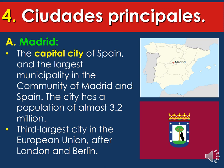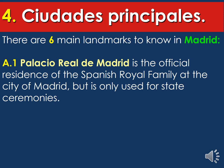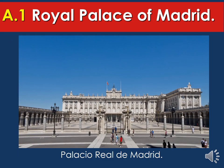There are six main landmarks to know in Madrid. The first is Palacio Real de Madrid — the Royal Palace of Madrid. It is the official residence of the Spanish royal family at the city of Madrid, but it is only used for state ceremonies. Remember that picture from the Gobierno section? That is the same palace. The royal family does not live there anymore; they only use it for special ceremonies.